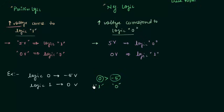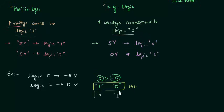In negative logic, 0 volts would be represented by logic 0 and minus 5 volts by logic 1. Looking at what is given in the problem: logic 0 corresponds to minus 5 and logic 1 corresponds to 0 volts. This matches the positive logic assignment, so the answer is positive logic.